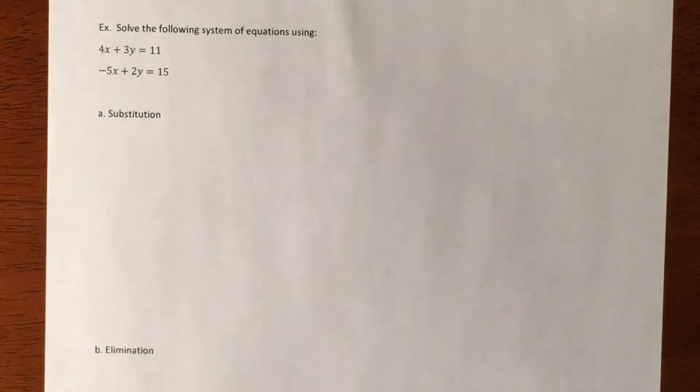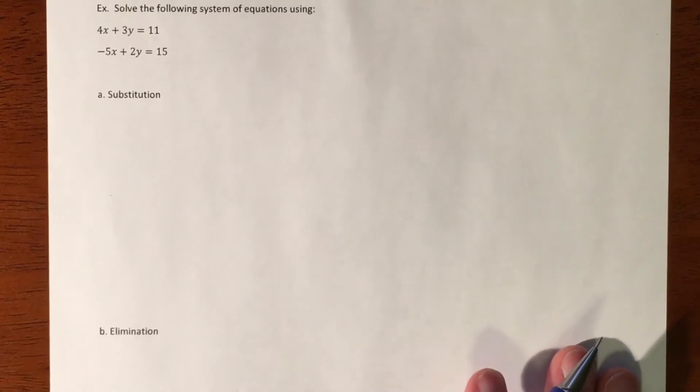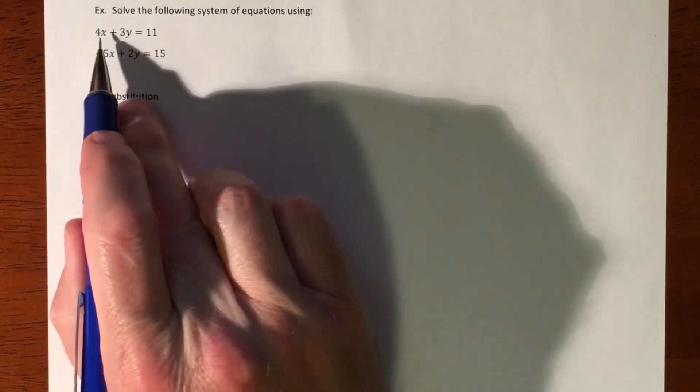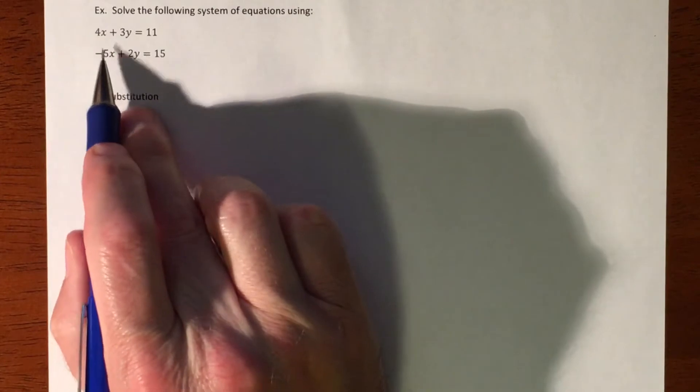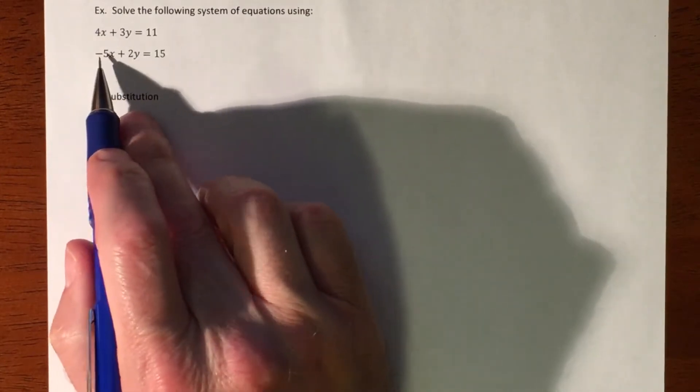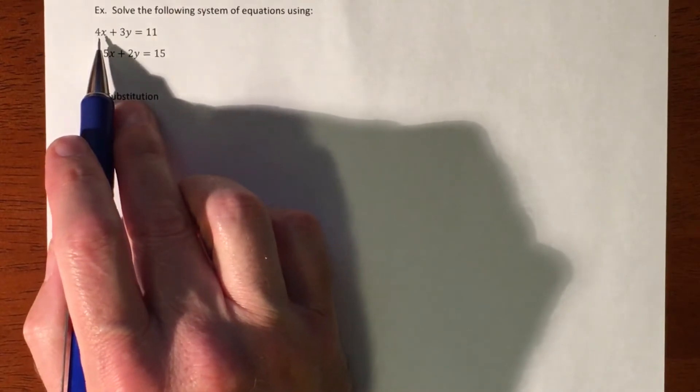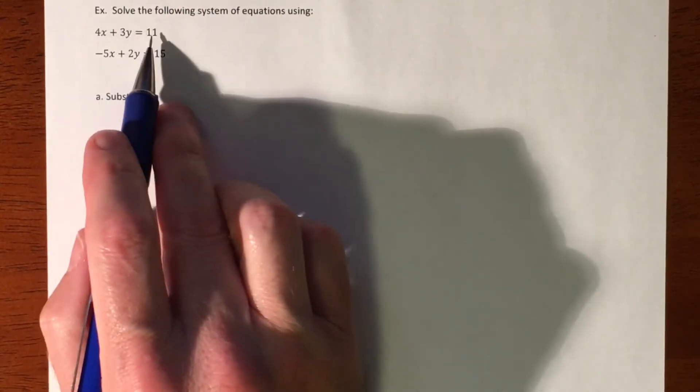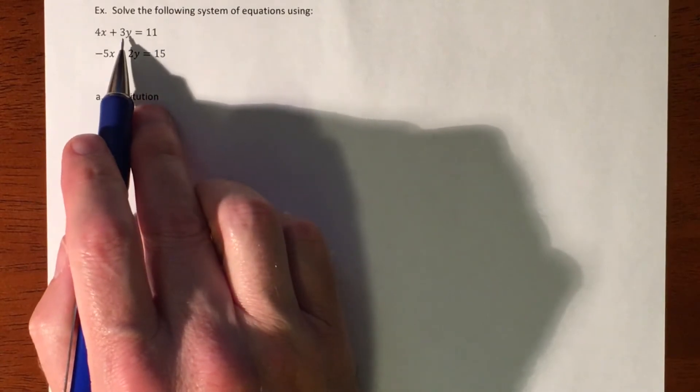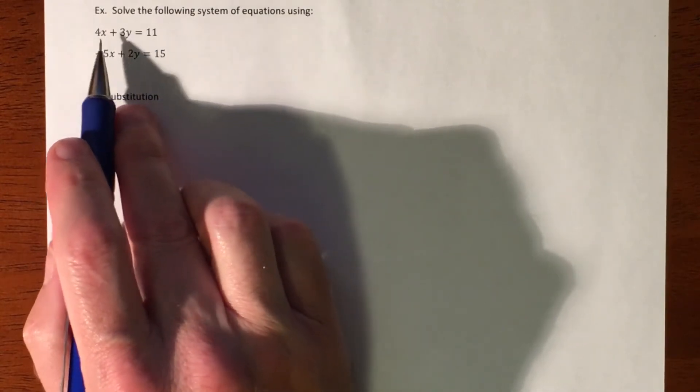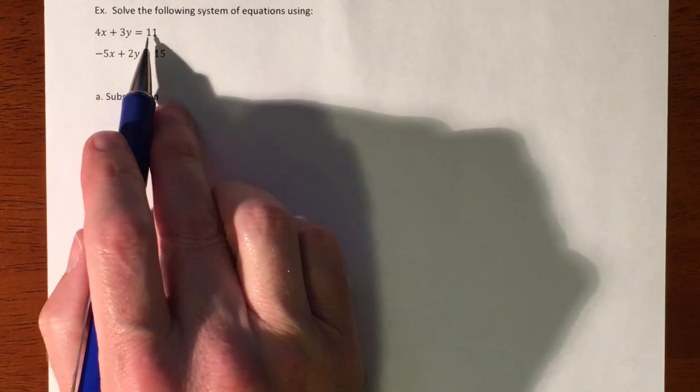So first off, to be honest I wouldn't even touch substitution because the idea of substitution is you need to get one of these letters by itself. Well to get this x by itself you're gonna have to divide by 4. 4 doesn't go into those very nicely so you're gonna create fractions. If I were to try to get that y by itself you're gonna divide by 3. 3 doesn't go into those very nicely, you're gonna create fractions.